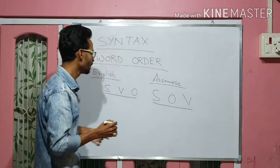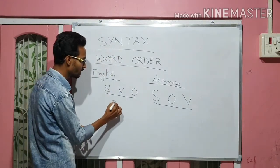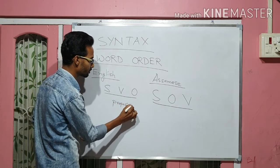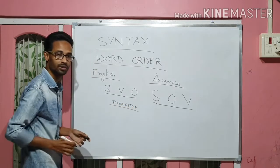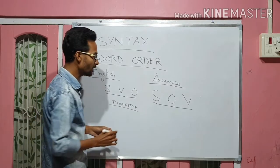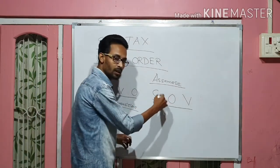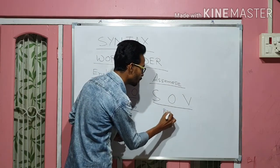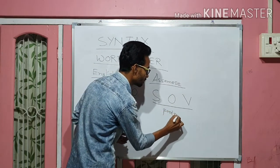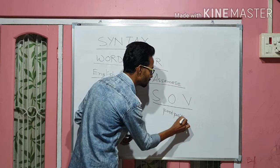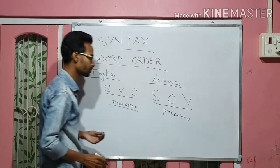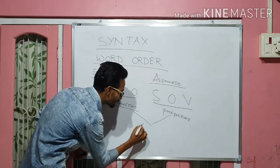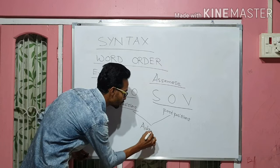For example, when it is an SVO language, there are always prepositions. In an SOV language like SMEs, there are always postpositions. Prepositions and postpositions are types of adpositions.